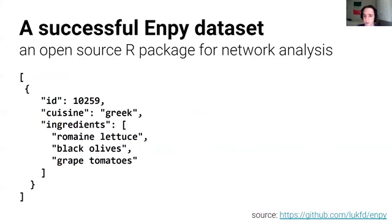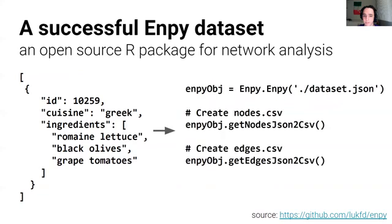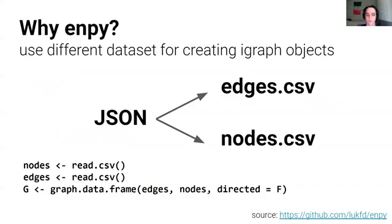npy is very simple. We first start by creating the object and giving it the json dataset path, and then we can create the nodes.csv by calling the get_nodes_json.csv method and the same thing for the edges.csv. So from our json dataset we came up with this easy way of getting the information from a general dataset.